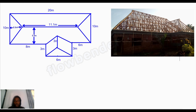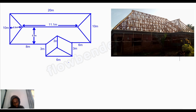The next thing I want to do is get the length here. I count: one, two, three, four, five, six, seven, eight, nine, ten, eleven — that's eleven spacings. Eleven times 0.36 gives 3.96 meters, which I approximate to 4 meters.